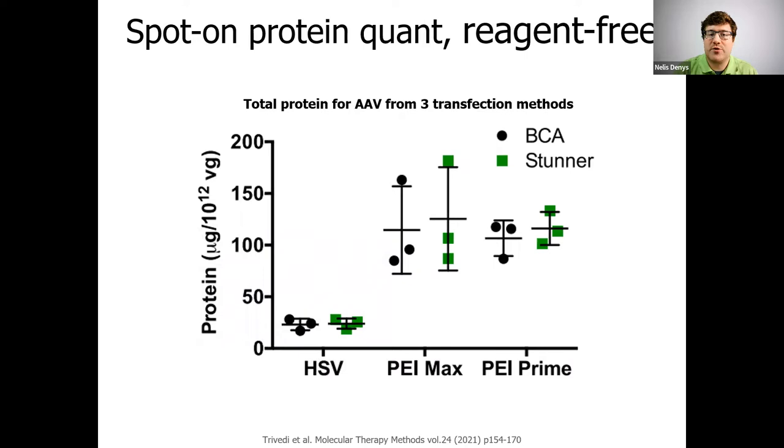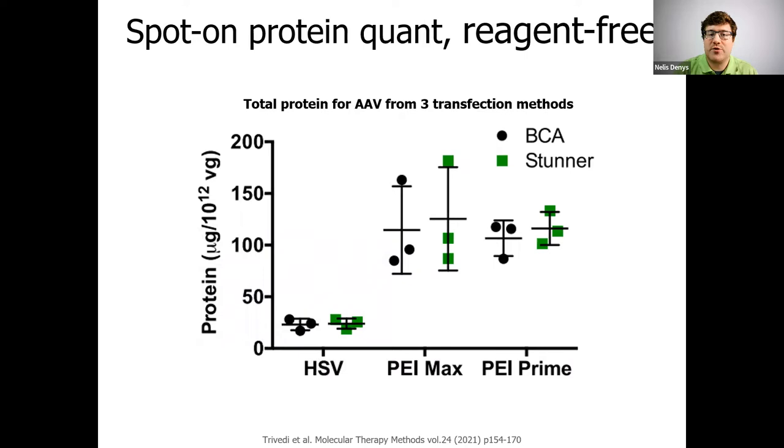Now, total protein was also measured to get the capsid titer, and to use this capsid titer as denominator to calculate the percent full further in the article. Good correlation between traditional BCA assay and Stunner to get a total protein concentration across the different production methods. But compared to BCA, Stunner uses no reagents, no standards, making it all a lot faster with less hands-on time.